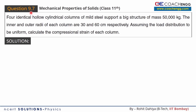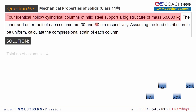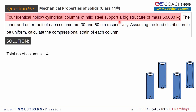Hello friends. I will now discuss question number 7 of the topic Mechanical Properties of Solids. Four identical hollow cylinders of mild steel support a big structure of mass 50,000 kg. Here we have four hollow cylinders made from mild steel — if you can see the diagram here, the outer radius and the inner radius is shown.